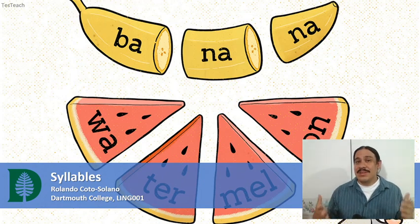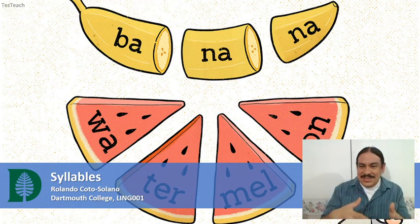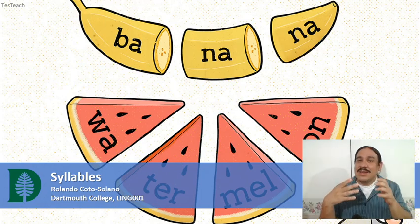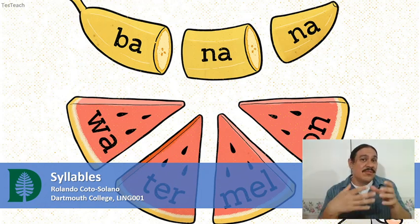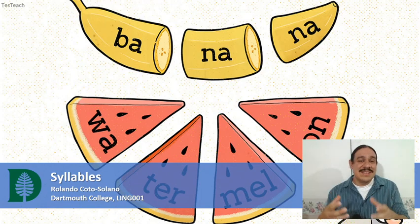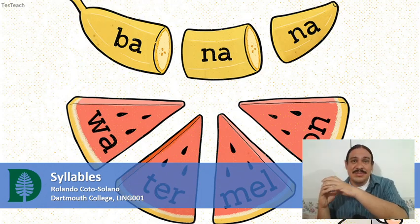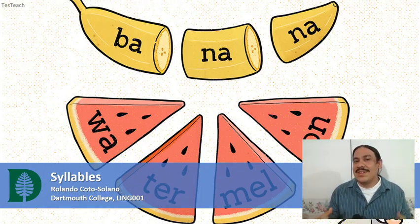Over the last week and a half, we have been focusing on sounds and looking at a kind of phonological abstraction that we called a phoneme. Here we're going to focus on another type of phonological abstraction that we're going to call a syllable.